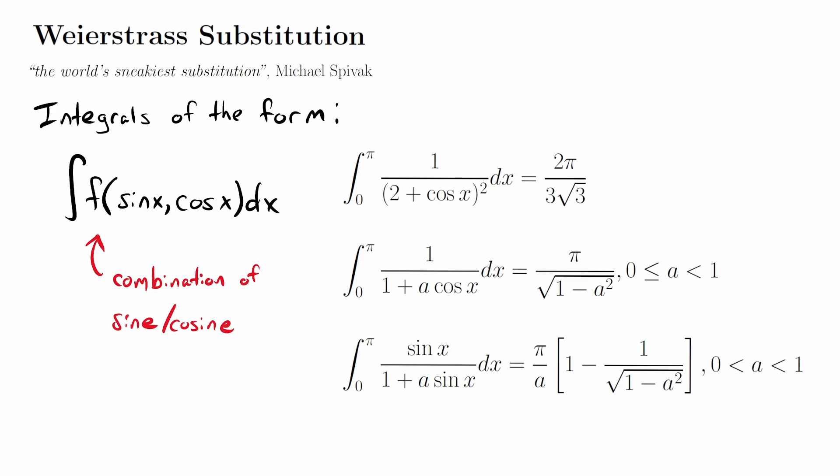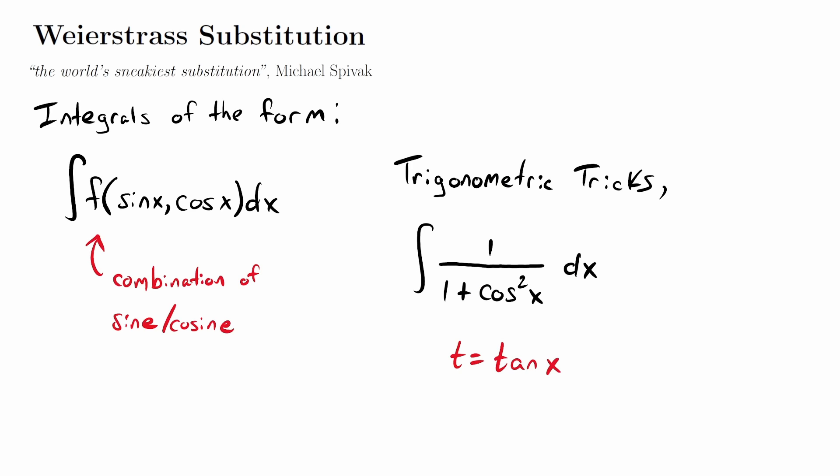Let's take a look at some problems that we already solved using similar substitutions. Earlier in the Art of Integration, we went through some problems with what we called trigonometric tricks. We had an example there — the integral of 1 divided by 1 plus cosine squared of x — and for that, we used the substitution t equals tangent of x. We're going to use this as motivation. Now the examples that we're going to apply Weierstrass substitution to only involve sine and cosine, typically not sine and cosine raised to powers.